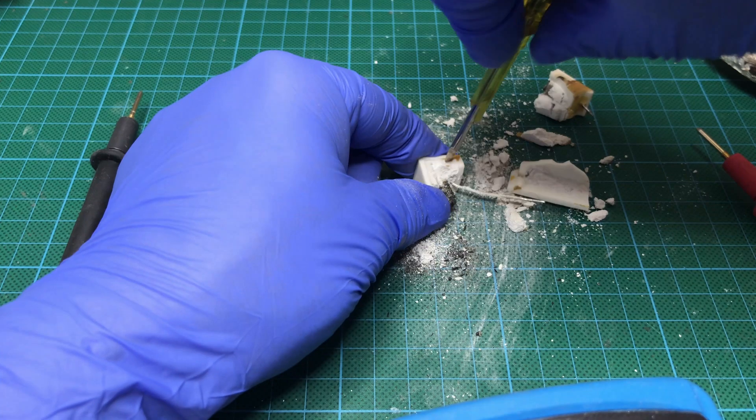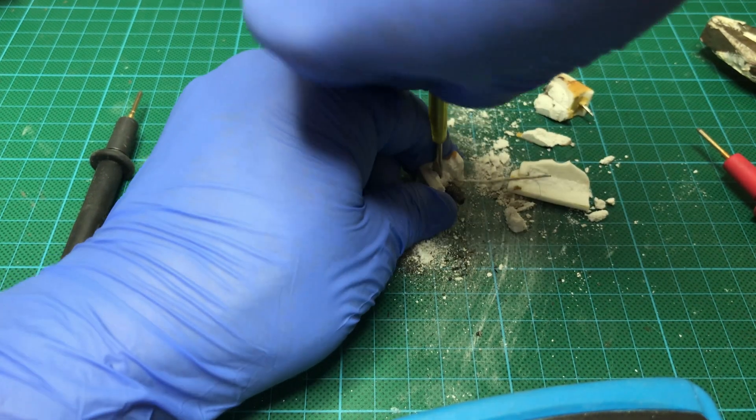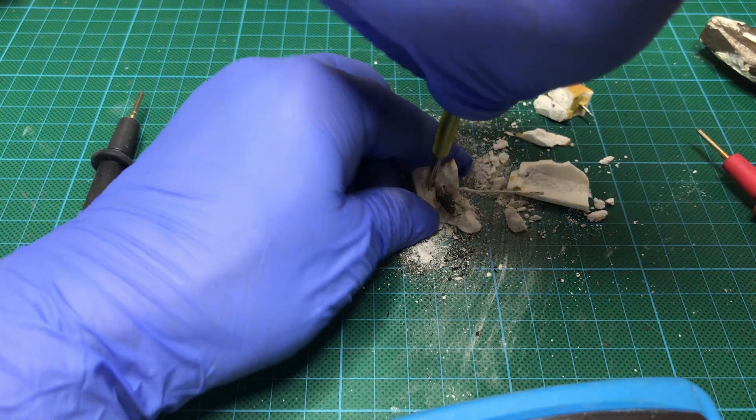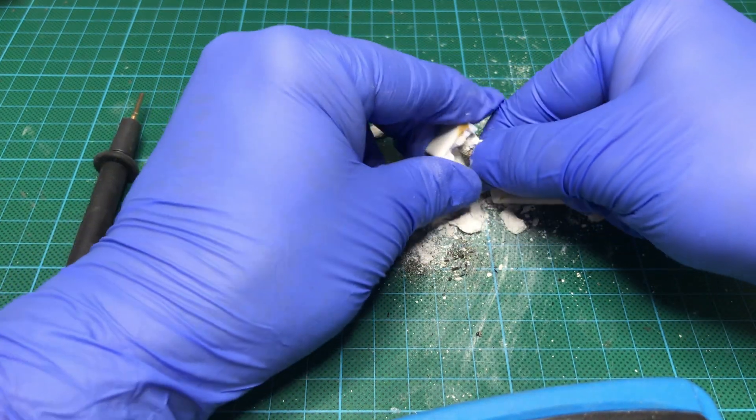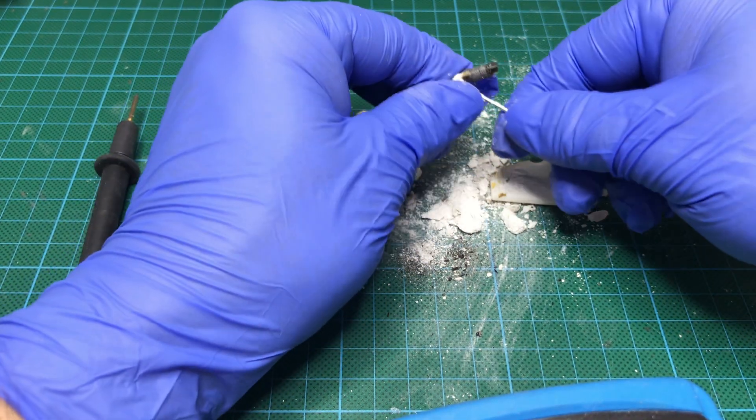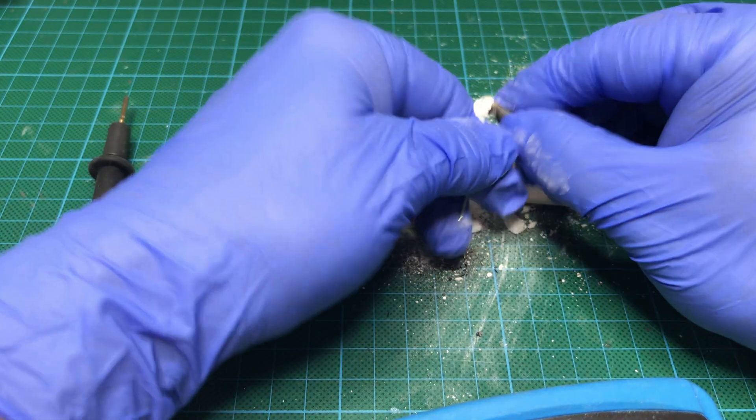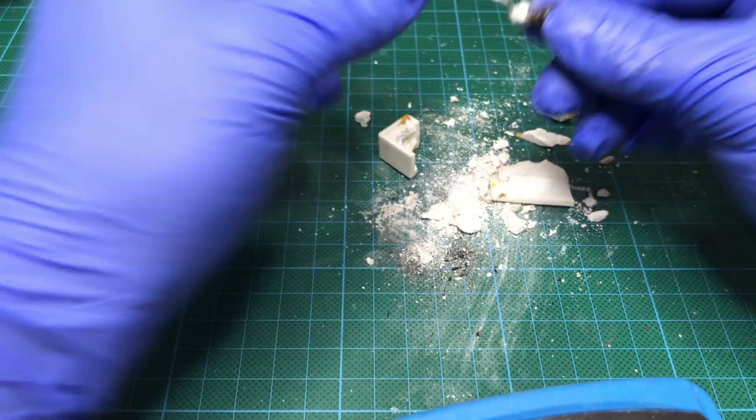Maybe get a screwdriver there and break everything apart. There we go. So this is the second part of the resistor. It does look a bit burned in both ways.